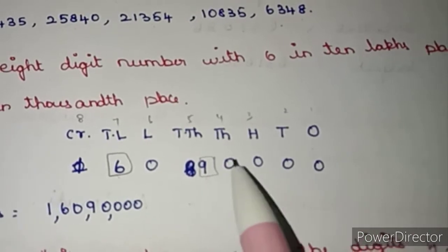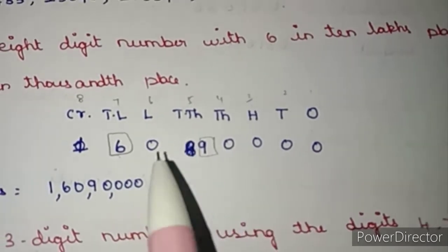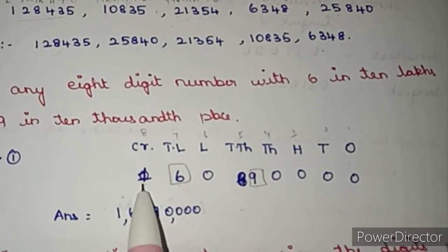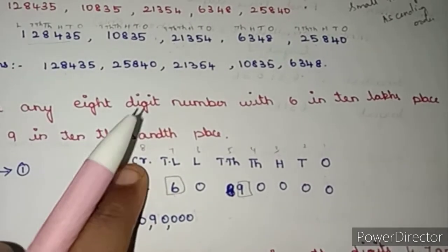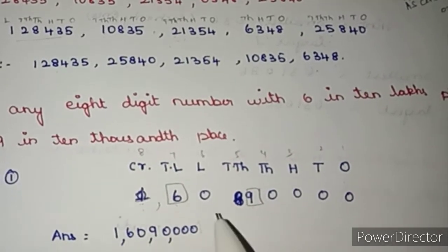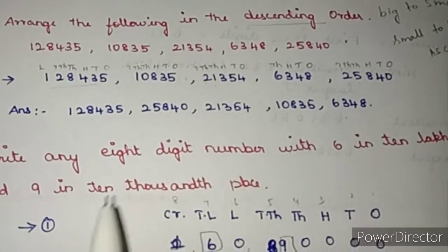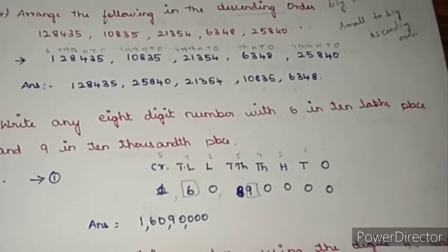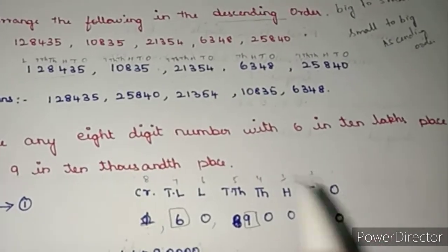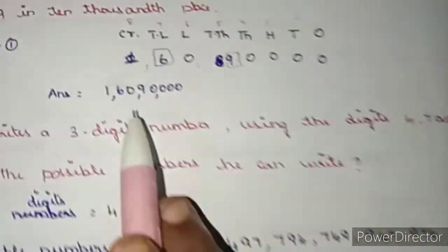I fill all other columns with 0, but I cannot put 0 in the crore place because it would become a 7-digit number. So I write 1 at the start. The number is 1 crore, 60,90,000. If they had asked for the largest, we start with 9; for smallest, we start with 1. This is the answer.